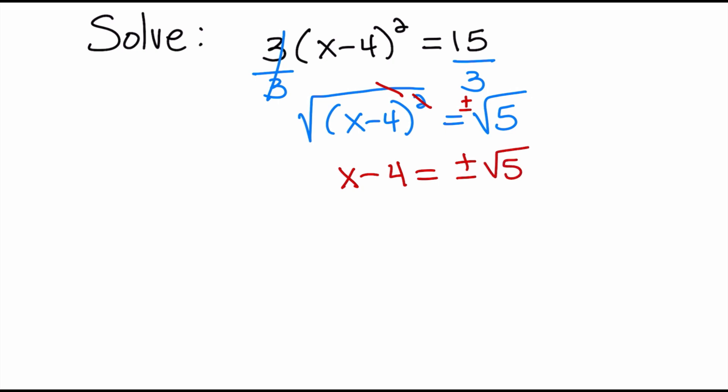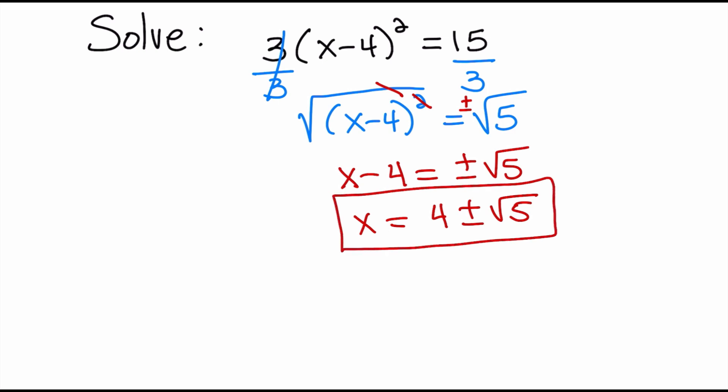The square root of 5 cannot be simplified any further — 5 is a prime number. The only thing left to do is solve for x by adding 4 to the other side. It is best practice to leave the plus or minus part in the middle, so your answer is 4 plus or minus the square root of 5.